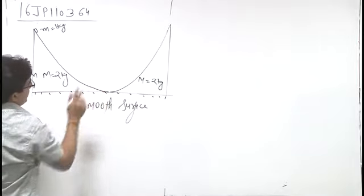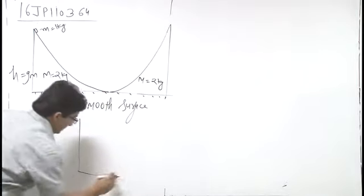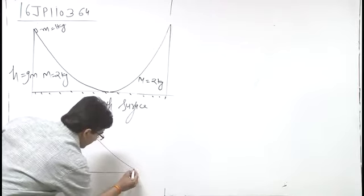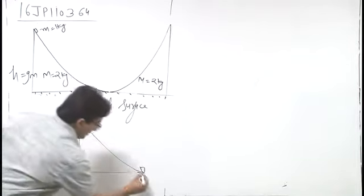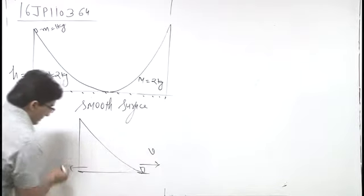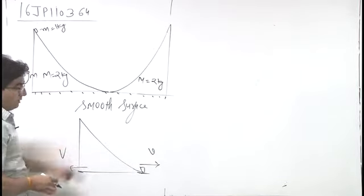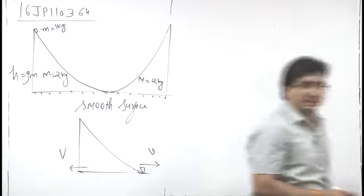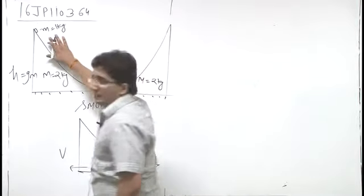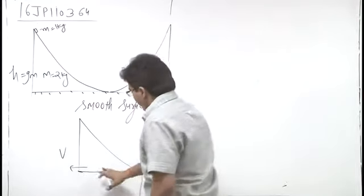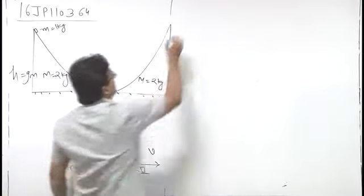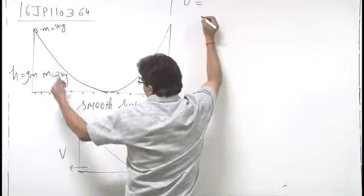When the block reaches the lowest position, at that instant, wedge and block both are moving. The block is moving in one direction and the wedge in the other. Let this be velocity v (block) and velocity V (wedge). There is no friction and no external force in the x direction, so momentum remains constant. Initial momentum in x direction is 0 (released from rest), and final momentum is also 0. Mass of block is 1 kg and mass of wedge is 2 kg.